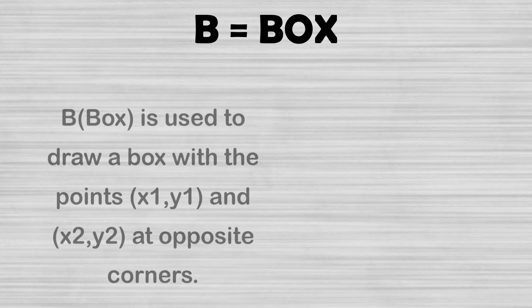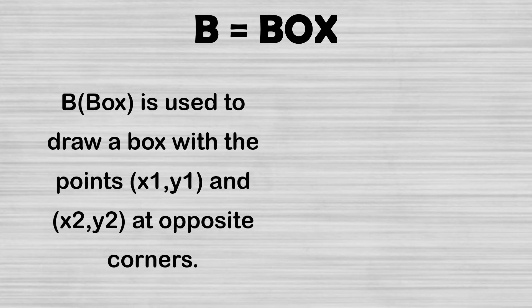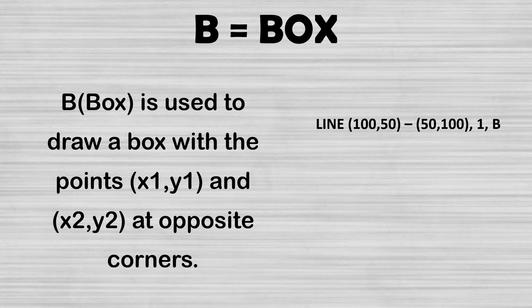B is for Box. Box is used to draw a box with points x1y1 and x2y2 at opposite corners. The syntax would be: LINE 150 TO 50, then comma 1 means a blue colored box will be drawn, and comma B means an empty box — a blue colored outline box — will be drawn on the screen of GWBasic.